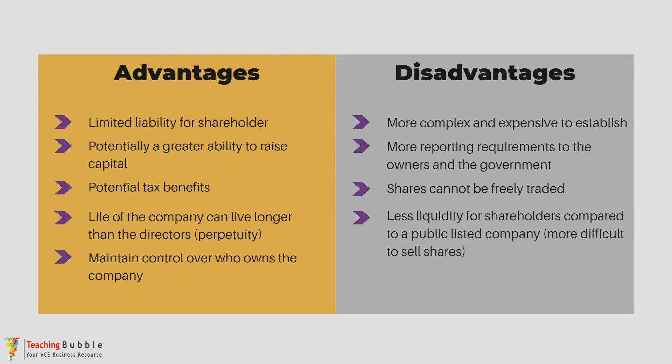However, a private limited company is more complex and expensive to establish because of the incorporation process. There are also more reporting requirements compared to sole trader and partnership structures, though those reports don't need to be made public. Another disadvantage is that shares cannot be freely traded. While this allows more control over ownership, it makes it harder to raise large amounts of capital like public listed companies can. It also results in less liquidity for current shareholders, as selling shares requires approval from the existing shareholders.